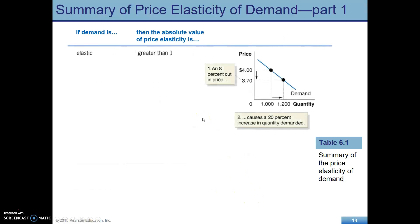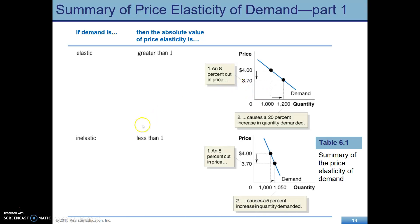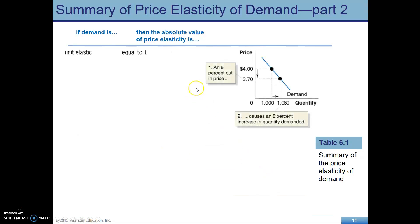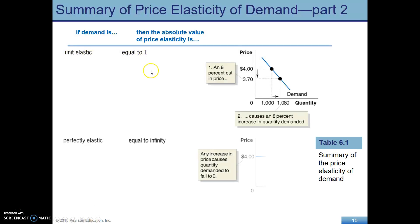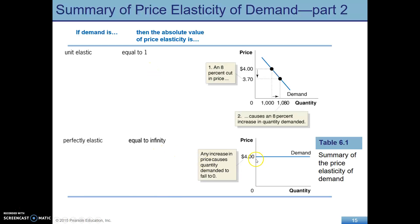A horizontal demand curve is infinitely responsive to a change in price — that is infinite elasticity and perfectly elastic. Here are some graphs to summarize: elasticity greater than 1 in absolute value is elastic, like we saw in the first gasoline example. Inelastic would be less than 1. Unit elastic is equal to 1. Perfectly elastic: a small change in price has an infinite effect on quantity — a perfectly horizontal curve. Contrast that with perfectly inelastic, where any change in price keeps you at the same quantity demanded. That is equal to zero.